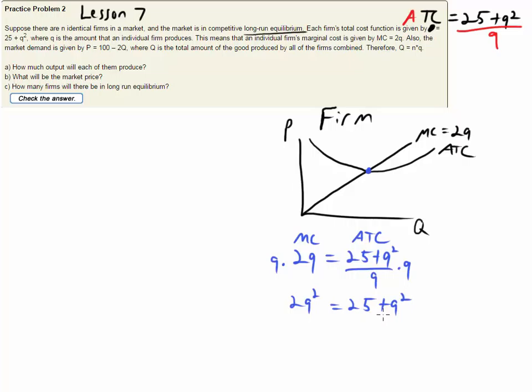We want to solve for Q so get all the Qs on one side of the equation. Minus Q squared. So now 2Q squared minus Q squared equals just Q squared is 25. So Q equals 5. Take the square root of both sides.